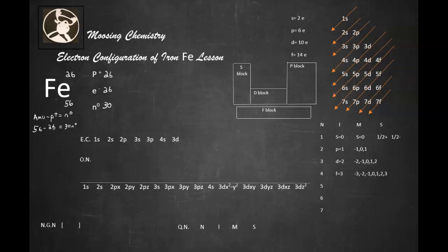Now, before we get into the electronic configuration, let's look at our subshells. Our s subshell can hold 2 electrons. Our p subshell can hold 6 electrons. Our d subshell can hold 10 electrons. And our f subshell can hold 14 electrons.